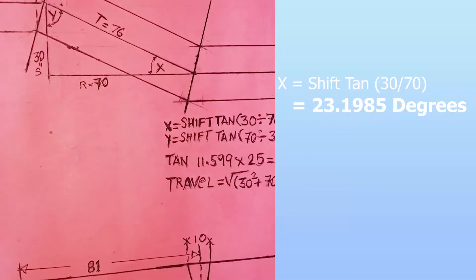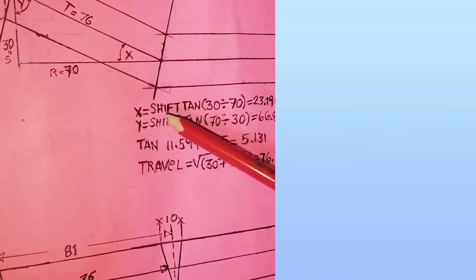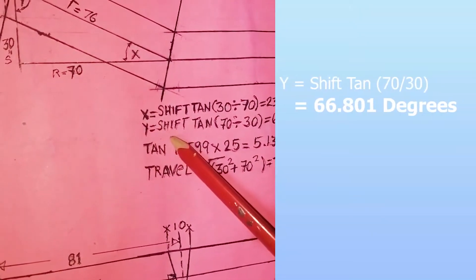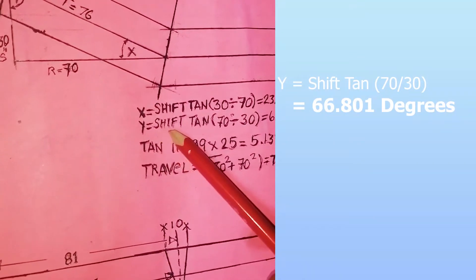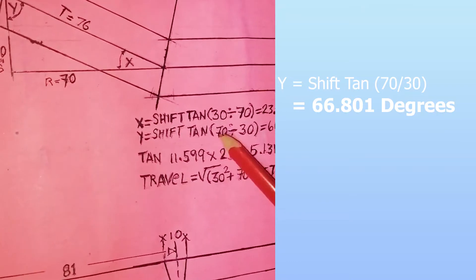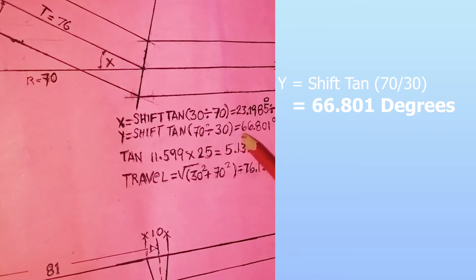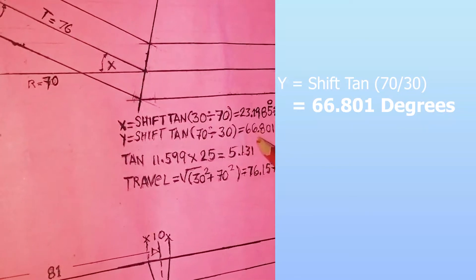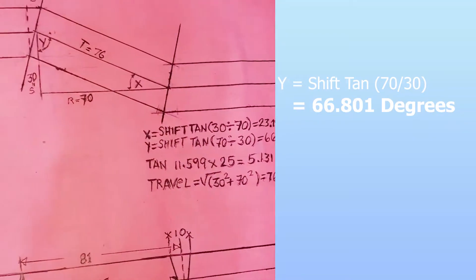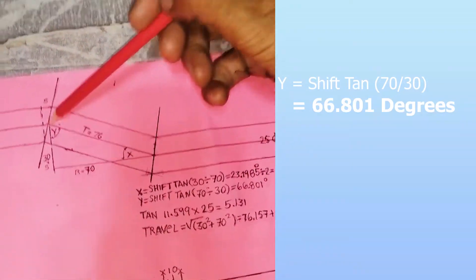Ngayon, ito namang y, yung degrees ng y. Y equals shift tangent, close, 70 divided by 30, close, equals 66.8180 degrees. Yun yung degrees nito.